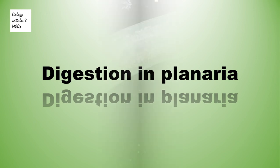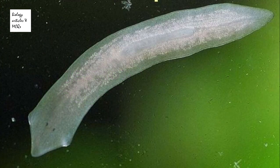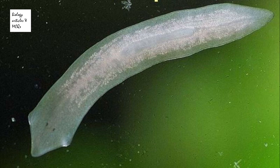Planaria is a flatworm that is found mostly in fresh water, and it can also be found in salt water environments. The name shows that it is shaped like a deflated balloon — flat, without air.